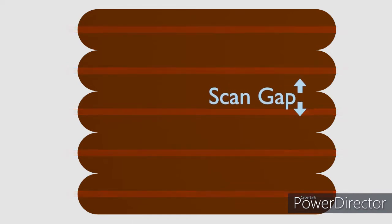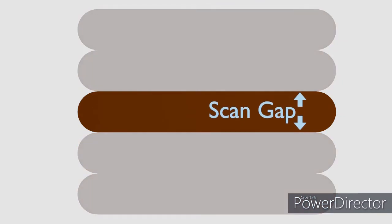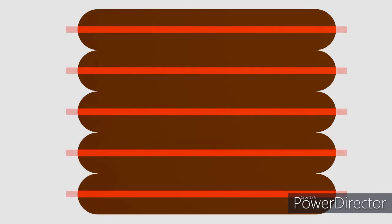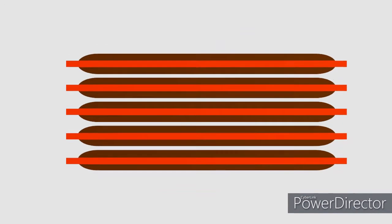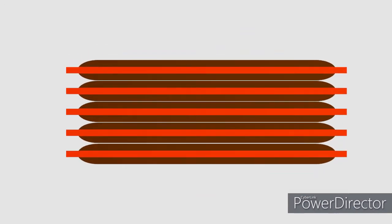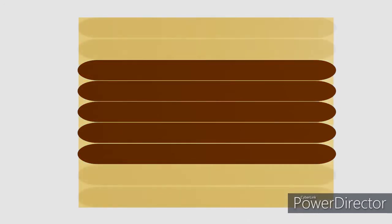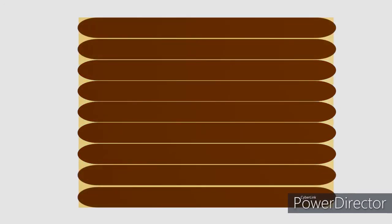The scan gap is the distance between each line drawn during a raster engrave pass. Ideally, this distance would be the exact width of the line being engraved — so thicker lines mean a thicker scan gap, and thinner lines mean a thinner scan gap. Remember, the smaller your scan gap is, the more lines you'll need for a given piece, and therefore your overall engrave time is going to be greater.